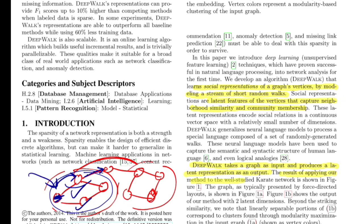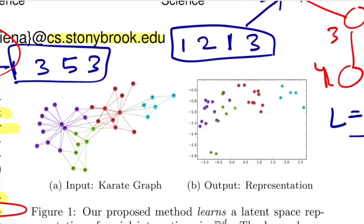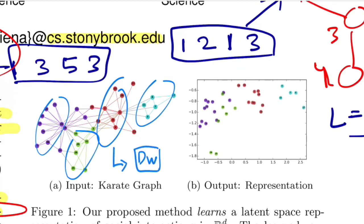DeepWalk takes a graph as input and produces a latent representation as output. The result of applying this method to the well-studied karate network is shown in the figure. So Zachary's karate club is a very popular network example that people often cite when talking about community structure in networks. It's a story of a karate club that divided into two sub-communities because of some dispute between the teachers. Here, if we see, they have bifurcated it further into four clusters. So what authors propose? This graph goes as input to their DeepWalk model and outputs embedding for each node, which is essentially each member of the karate club in an R2 space.